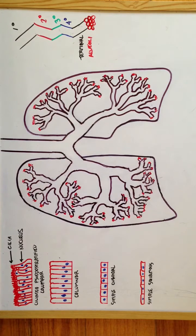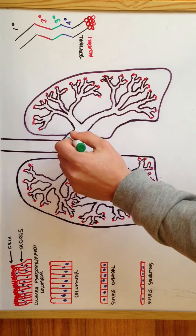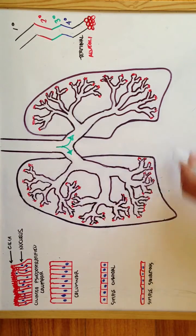The bronchial tree begins at the level of the 5th thoracic vertebrae, where the trachea bifurcates into the right and left primary bronchi, which then lead to the right and left lung respectively.